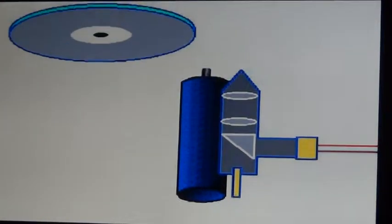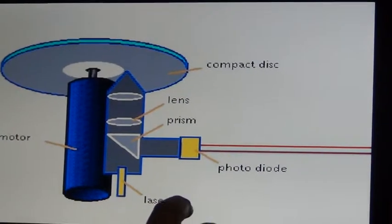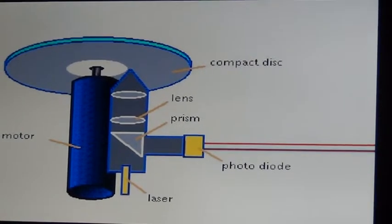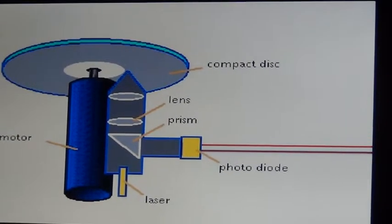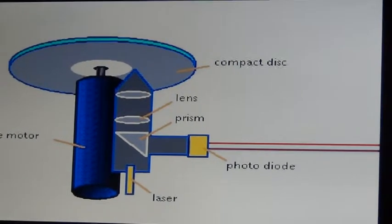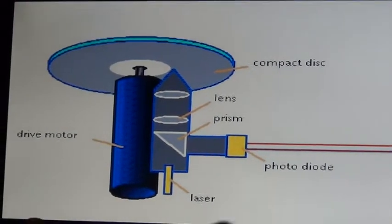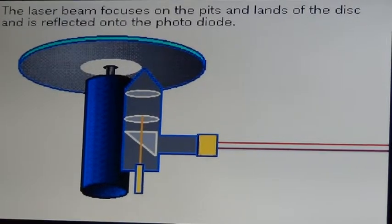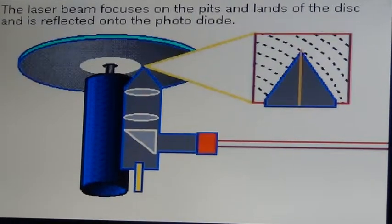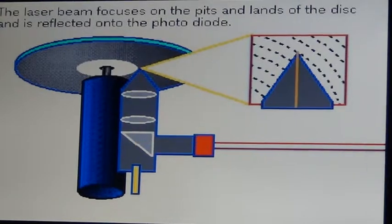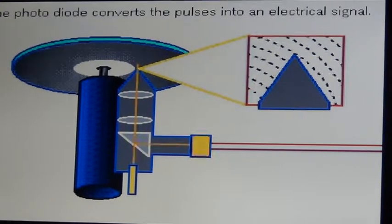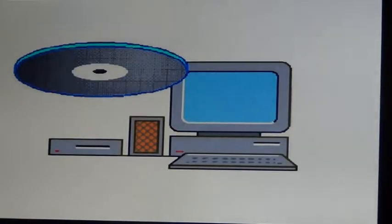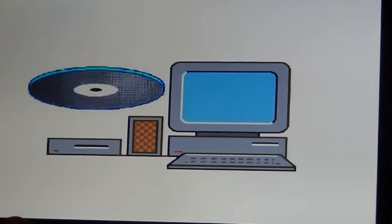Now I am going to explain using a 3D animation. Information on a computer is stored as thousands of zeros and ones called bits. As we are seeing here, this is a compact disc with a laser, a photo diode, and a drive motor. On a CD-ROM, bits are represented as microscopic thousands of pits and lands. The laser beam focuses on the pits and lands of the disc and is reflected onto the photo diode. The photo diode converts the pulses into an electrical signal that a computer recognizes as a stream of zeros and ones.